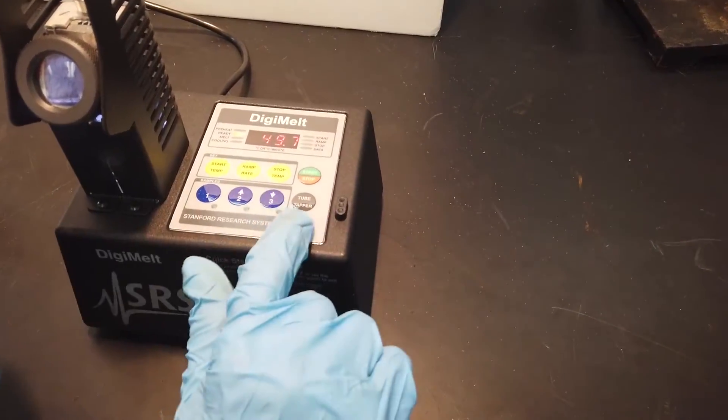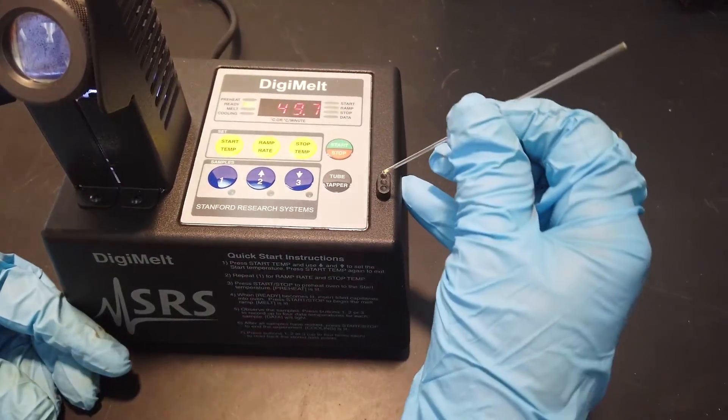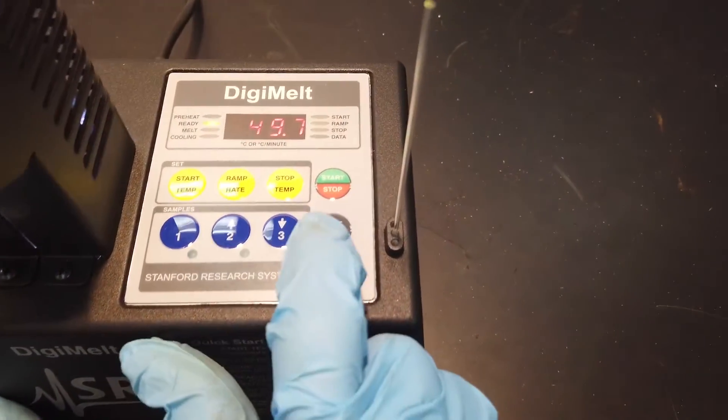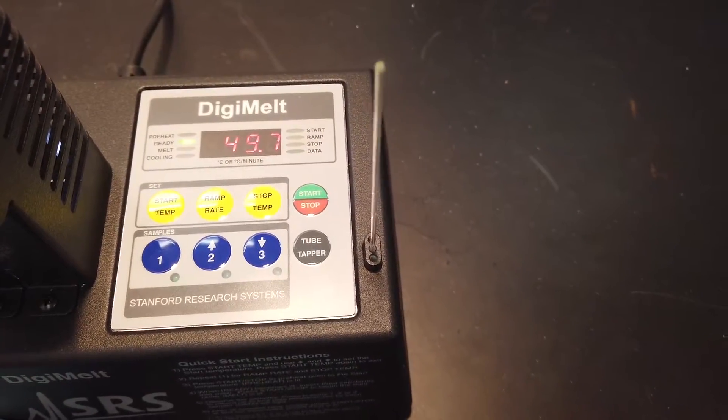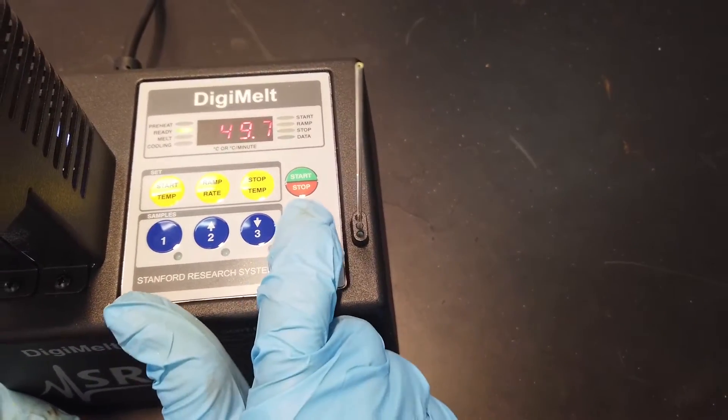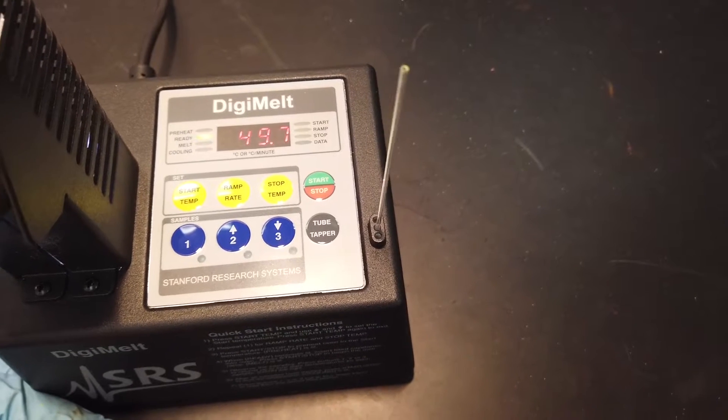You can also use the tamper on the side of the Melt-Temp. Place the capillary tube into the tamper and press the button. It will automatically stop after a few seconds. You can repeat this process as many times as you need to get the solid to fall to the bottom of the capillary.